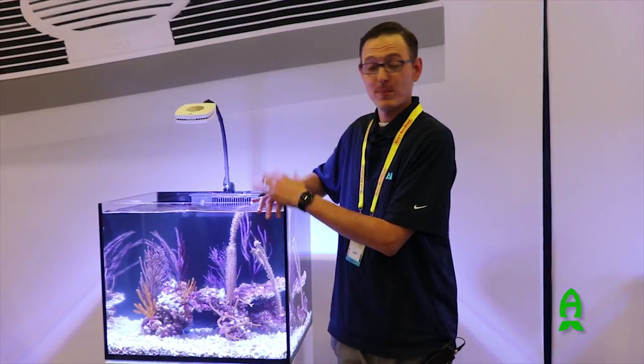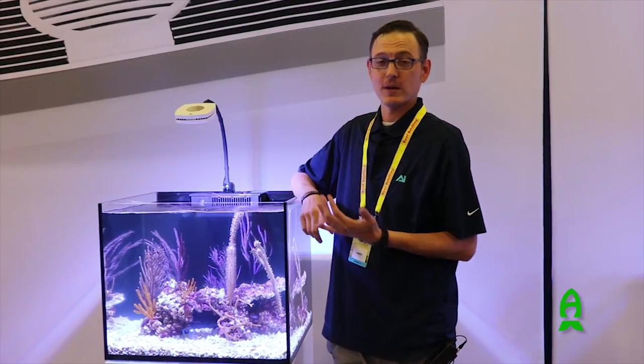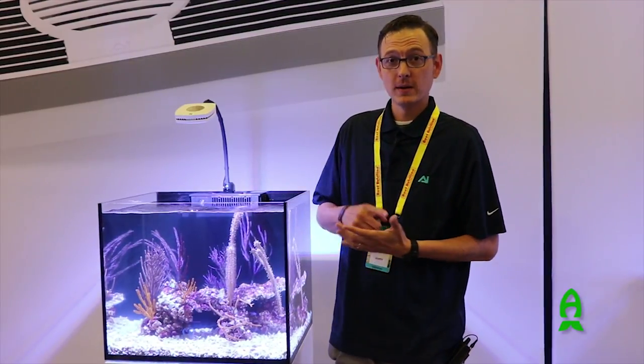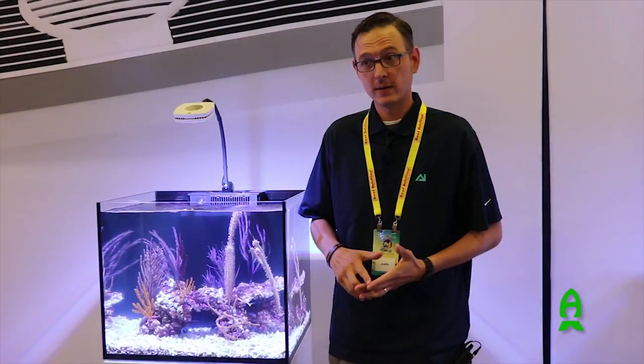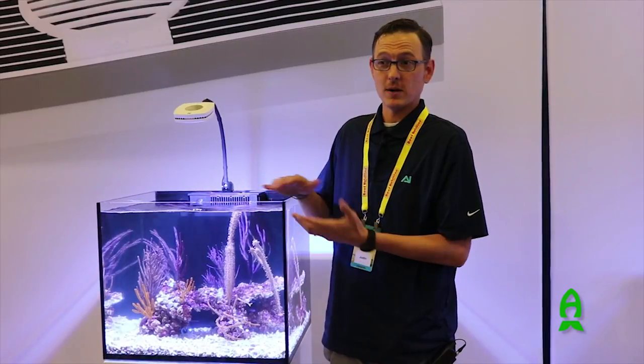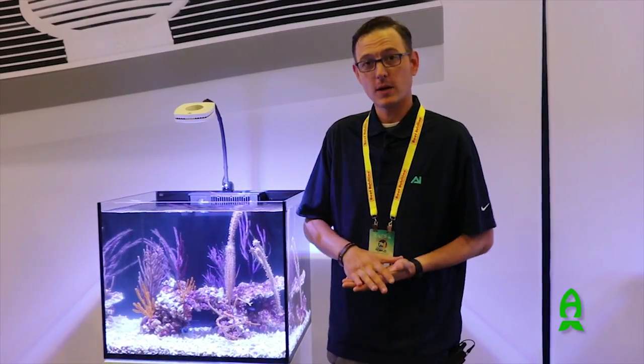So with the AI Prime HD, you get seven different color channels: cool white, royal blue, deep blue, green, UV, violet, and red. Within those seven color channels, those LEDs are seven of the best LEDs you can get on the market with the tightest binning possible.